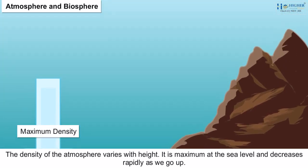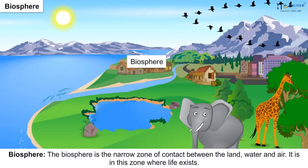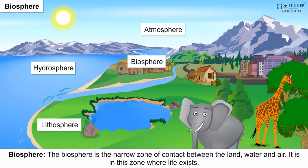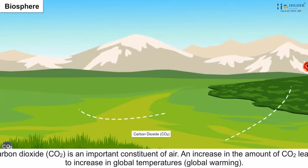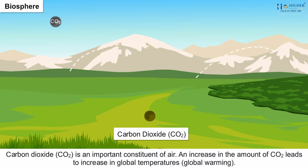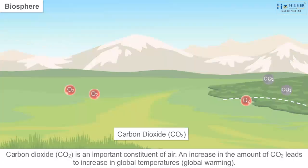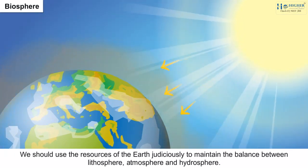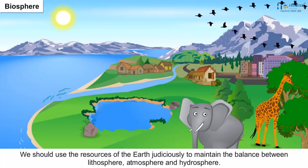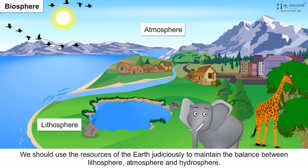The density of the atmosphere varies with height — it is maximum at sea level and decreases rapidly as we go up. The biosphere is the narrow zone of contact between land, water and air, and it is in this zone where life exists. The three domains of the Earth interact with and affect each other. All living organisms, including humans, are linked to each other and to the biosphere for survival. Carbon dioxide (CO2) is an important constituent of air — an increase in CO2 leads to an increase in global temperatures, or global warming. Therefore, we should use the resources of the Earth judiciously to maintain the balance between lithosphere, atmosphere and hydrosphere.